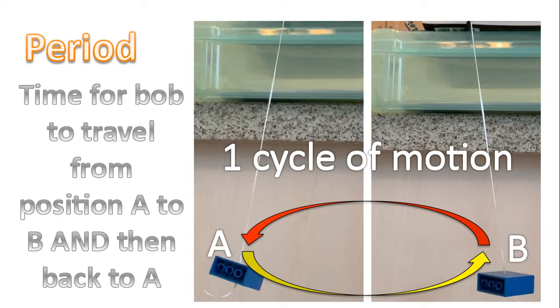Now when the pendulum bob moves from position A all the way to position B and then back to position A, we call that one cycle of motion. So that's what a period is. It's the time to measure one cycle of motion.